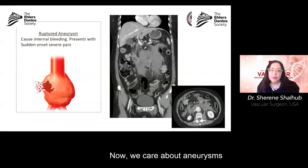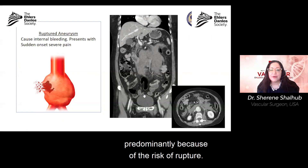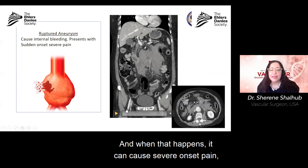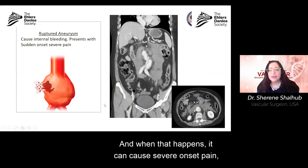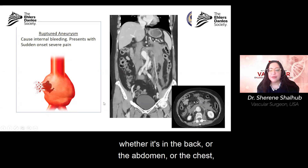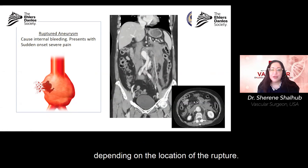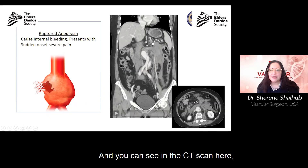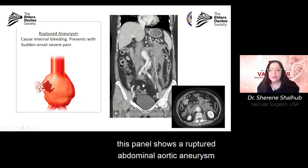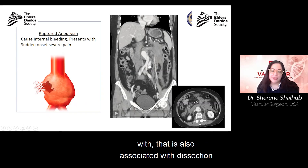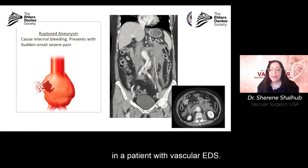We care about aneurysms predominantly because of the risk of rupture. When that happens, it can cause severe sudden-onset pain in the back, abdomen, or chest, depending on the location of the rupture. You can see in this CT scan a ruptured abdominal aortic aneurysm also associated with dissection in a patient with vascular EDS.